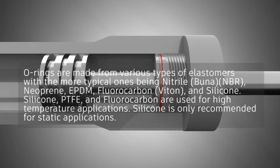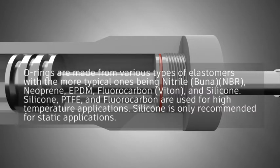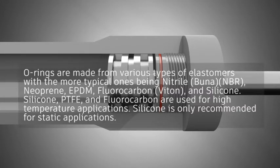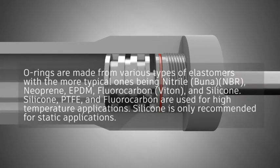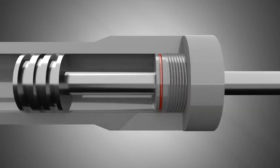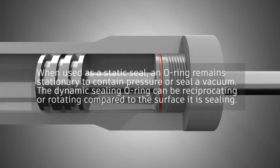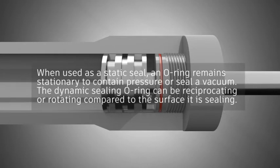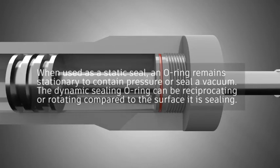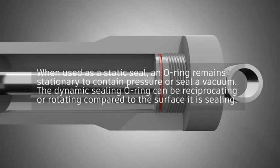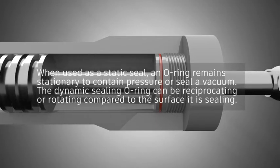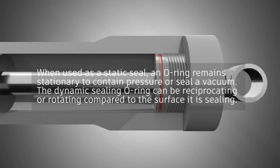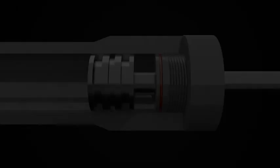Silicone, PTFE, and fluorocarbon are used for high-temperature applications. Silicone is only recommended for static applications. When used as a static seal, an O-Ring remains stationary to contain pressure or seal a vacuum. The dynamic sealing O-Ring can be reciprocating or rotating compared to the surface it is sealing.